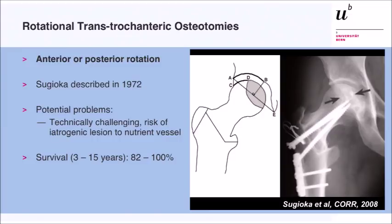Rotational osteotomies — the topic of the next talk — were first described by Sugioka. There is a description for anterior and posterior rotation around the femoral head-neck axis. It is technically challenging and carries a higher risk of lesion to the nutrient vessel of the femoral head. Results here are also quite good for advanced stages 2 and 3, with 80 to 100% survivorship at long-term follow-up.